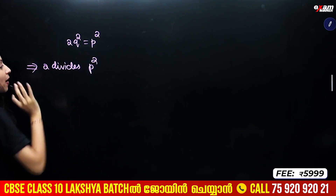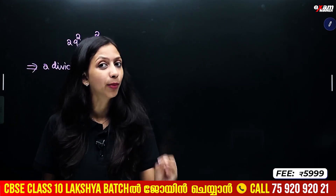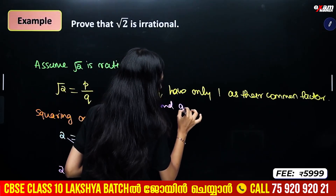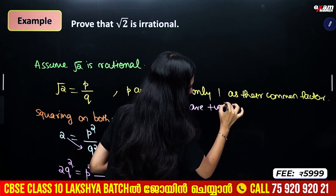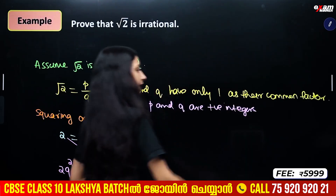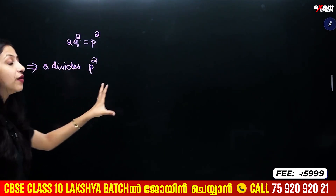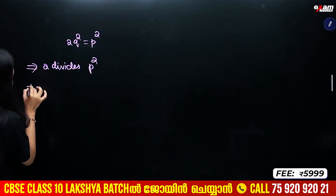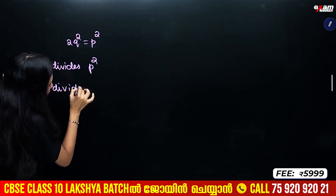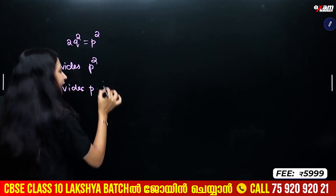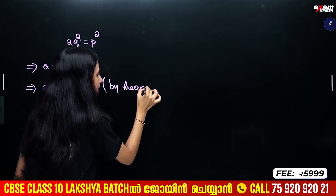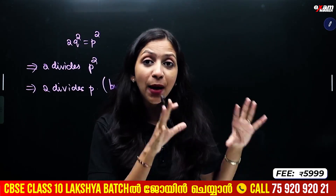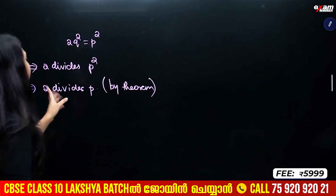P and Q are positive integers. Here we have 2 divides P squared. By theorem: if a prime number divides a squared, where a is a positive integer, then that prime number divides a. Therefore, 2 divides P.